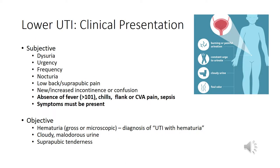Presenting complaints for patients with lower UTIs include dysuria, urgency, frequency, nocturia, low back pain, or suprapubic pain, new or increased incontinence or confusion — in the absence of fever greater than 101, chills, flank pain, CVA tenderness, and sepsis.